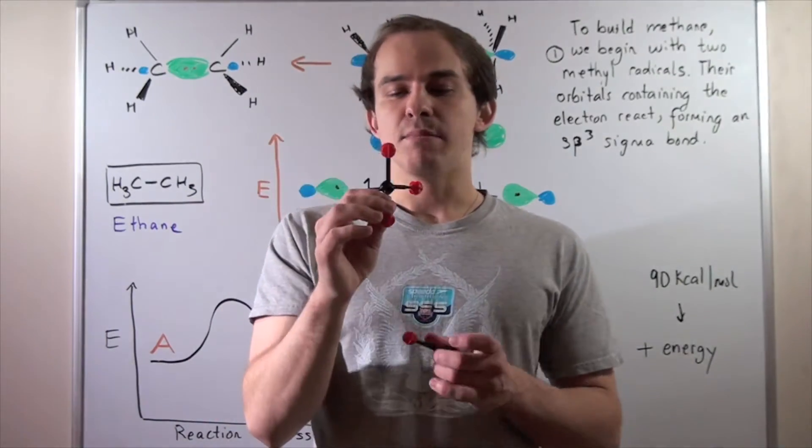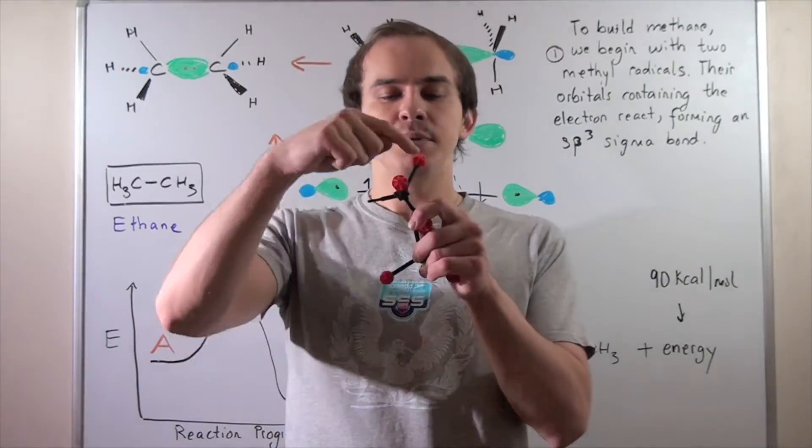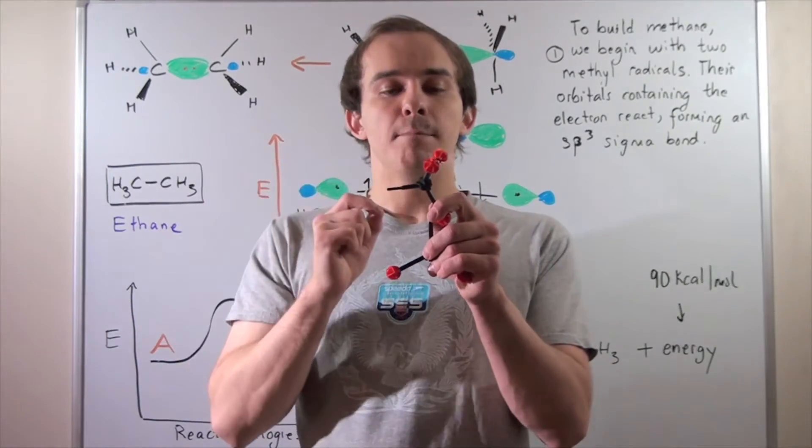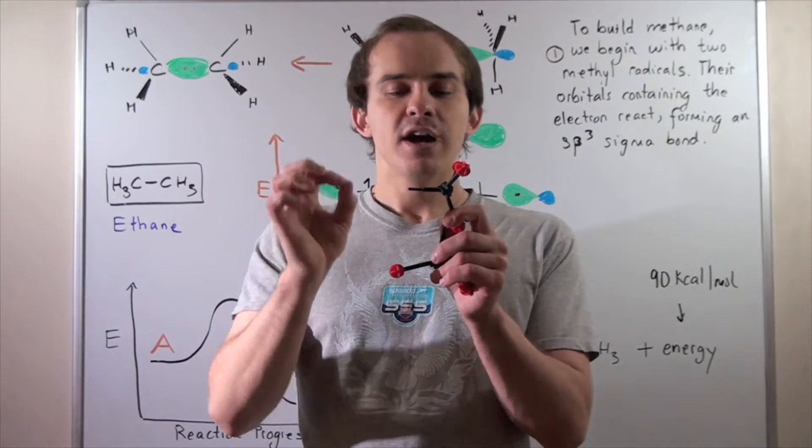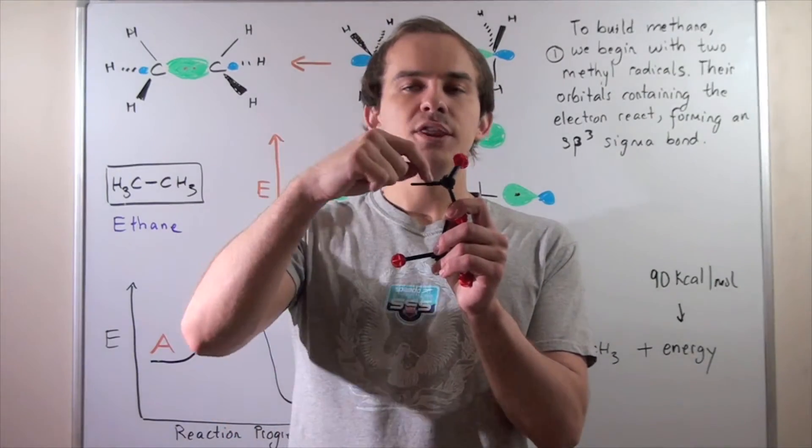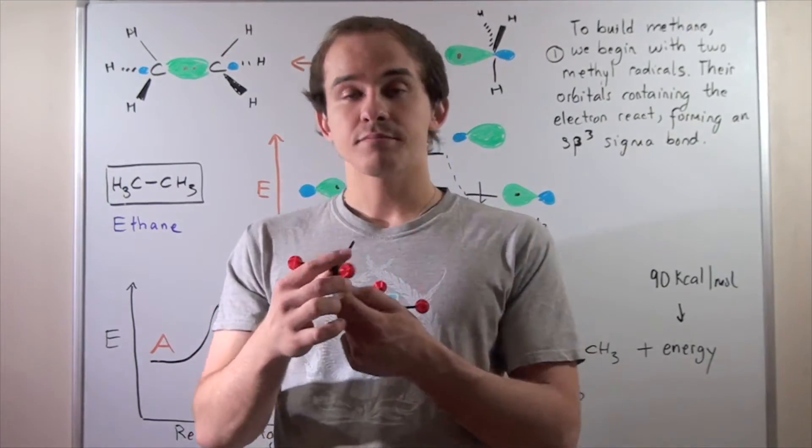The same thing goes for the second methyl radical. We have sp2 hybridized bonds between the carbon and H, and we have the one electron found within this 2p orbital.